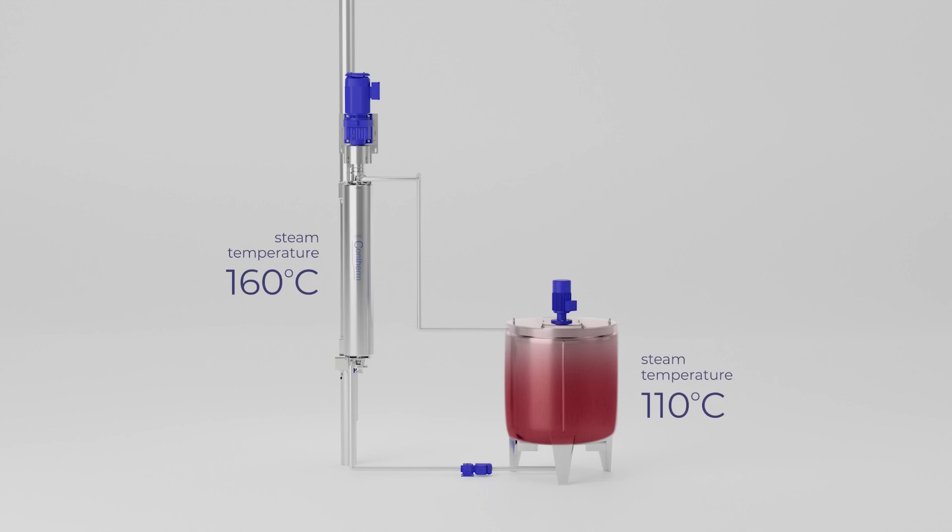When combined with a traditional kettle system, the Contherm can do the primary heating, allowing you to run your kettle at a lower temperature, avoiding burn-on and fouling in both systems.